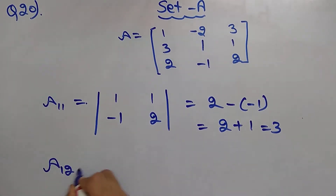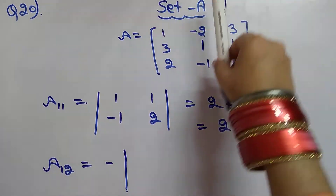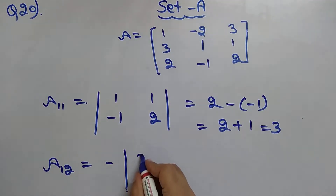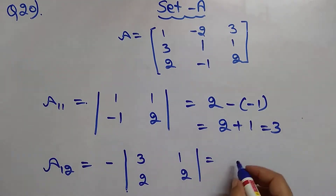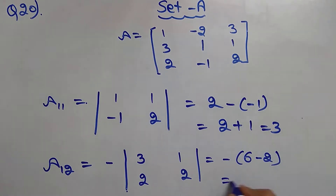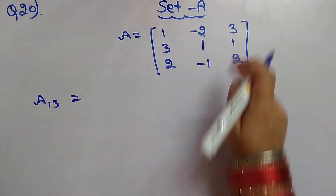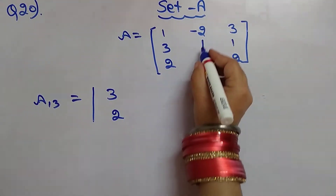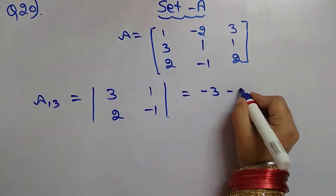A12 has a negative sign: leaving the first row and second column, the remaining part is [3, 1; 2, 2], so A12 equals negative(6 minus 2) equals negative 4. A13: leaving the first row and third column, the remaining part is [3, 1; 2, -1], so A13 equals negative 3 minus 2 equals negative 5.